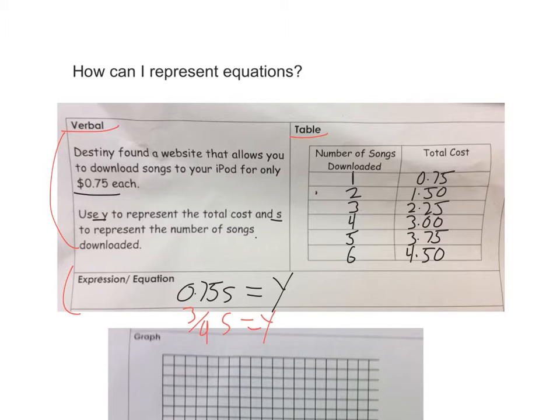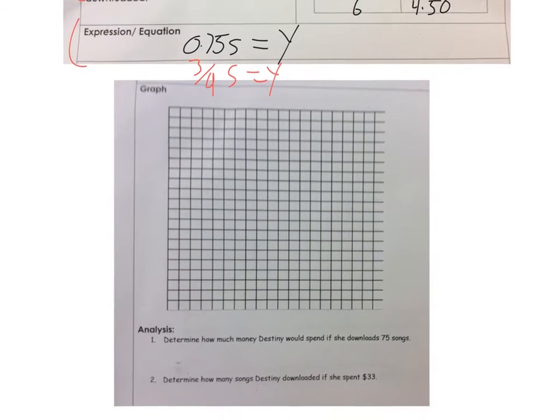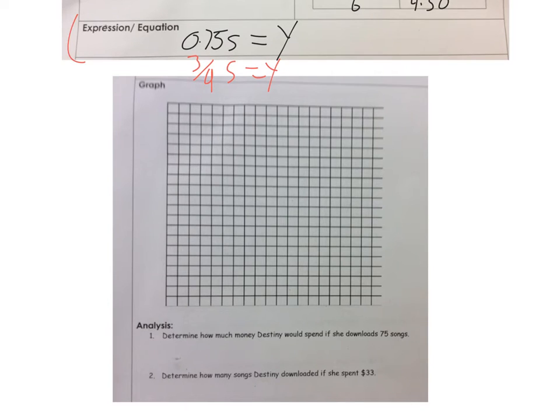So now I have a table, an expression, the verbal, and the next step would be to look at a graph. And so with a graph, the first thing you have to do is you have to understand that you have what you call an X and a Y axis.